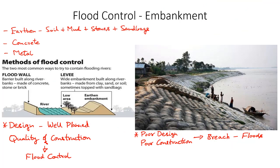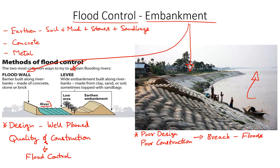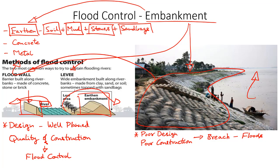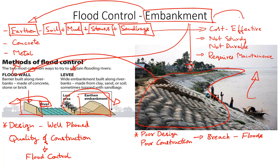The next flood control technique is the construction of embankments. An embankment is a physical barrier constructed along the river bed to limit the flow of water within the drainage channel. Embankments such as flood walls or levees are constructed alongside the river bed to limit the spill out of excess water into nearby habitat areas. They are found in both coastal and inland areas and are constructed using different types of materials. The most cost-effective method is the construction of earthen embankments, using locally available soil, mud, stones and sandbags.